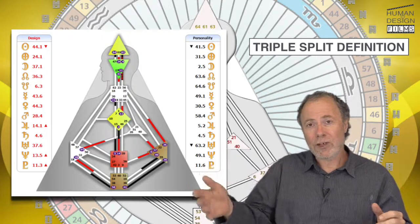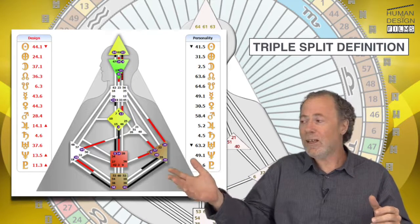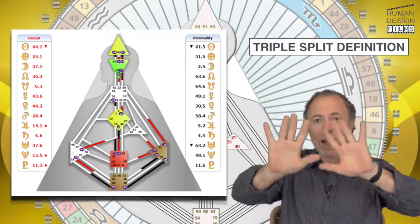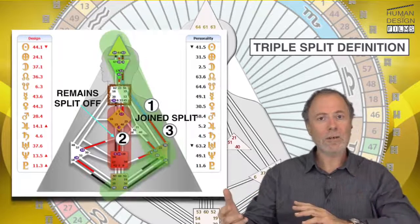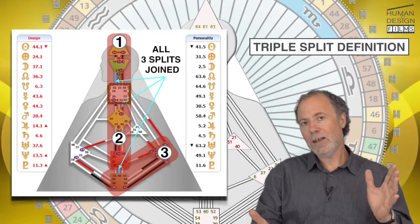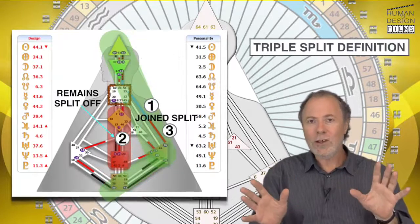People that have channels and gates that you don't have in them, when they come into your aura, they overlap, and suddenly you're connected in that particular way, and that particular way, and that particular way. So, it's always changing.